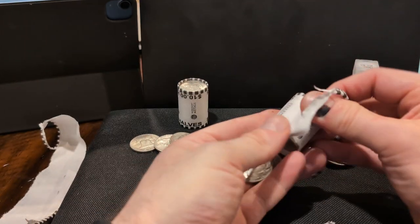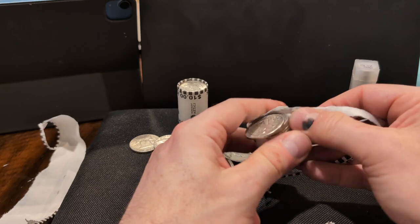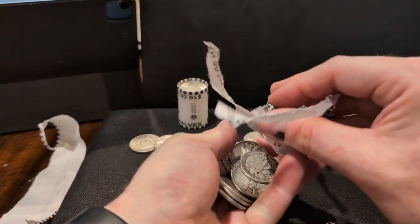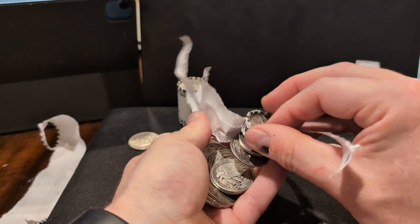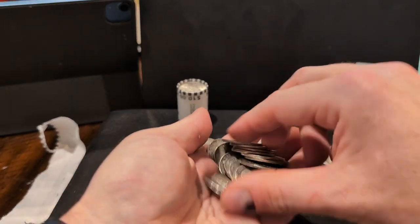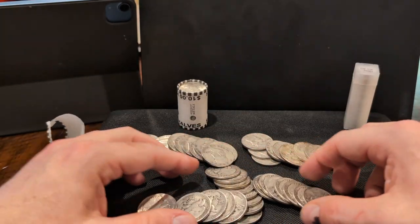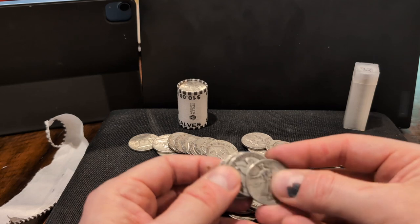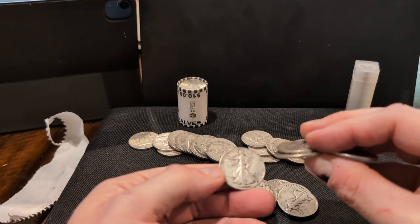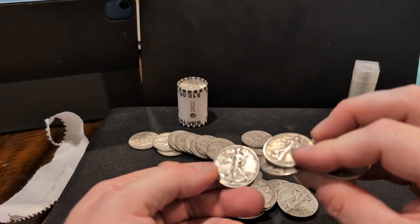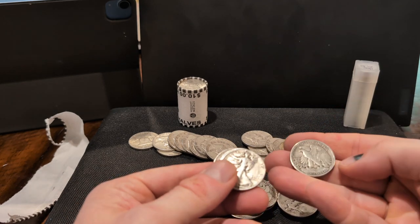Okay, let's take a look at this old paper. Come on. I'm going to take these out. These are the Walking Liberties. Let's see the dates. I think these are all from the 40s.